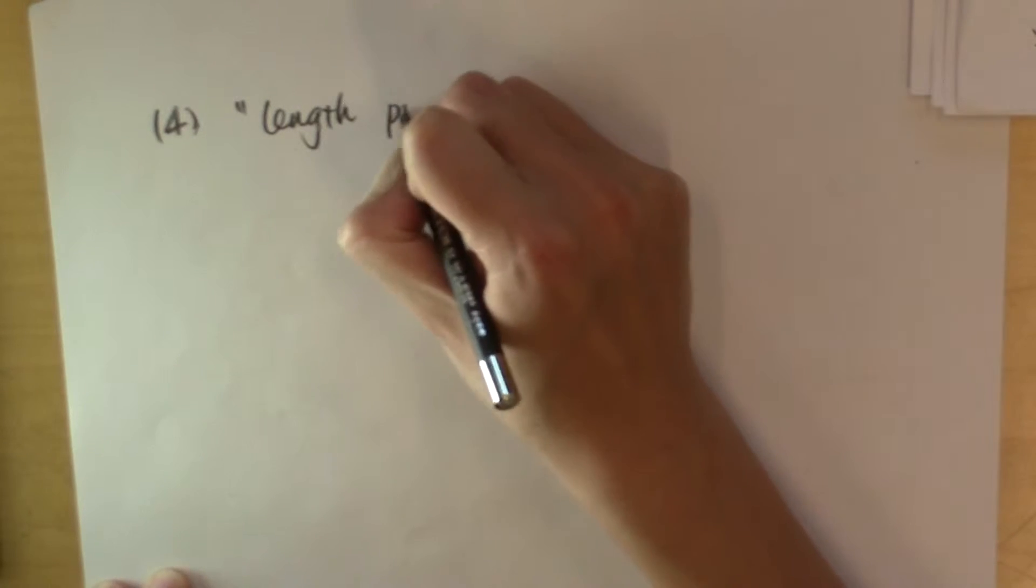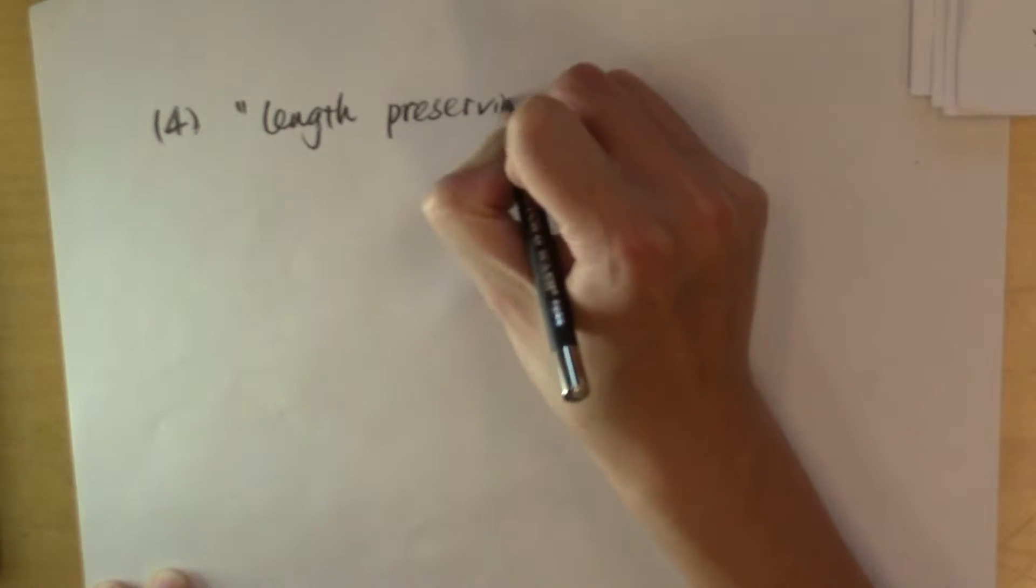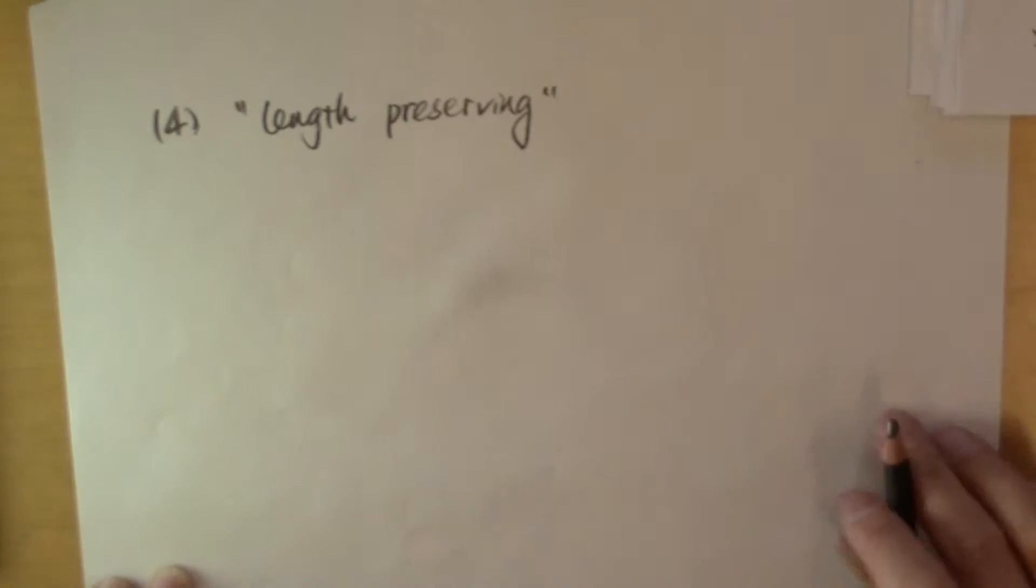The fourth cool thing I'm going to list here is those matrices that preserve the length of a vector when multiplied to that vector.